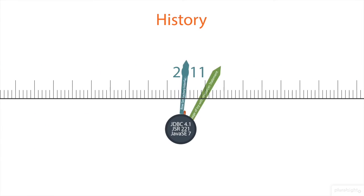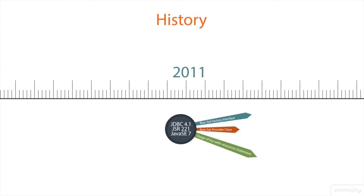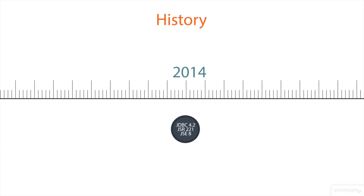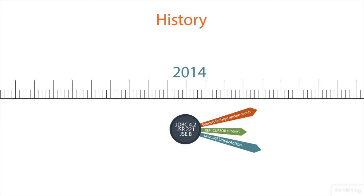JDBC 4.1 is specified by Maintenance Release 1 of JSR 221 and is included in Java Standard Edition 7. The latest version, JDBC 4.2 at the time of this recording, is specified by Maintenance Release 2 of JSR 221.